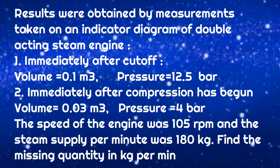Now the second question: the following results were obtained from an indicator diagram of a double-acting steam engine. Immediately after cut-off, volume equals 0.1 m³ and pressure equals 12.5 bar. Immediately after compression has begun, volume equals 0.03 m³ and pressure equals 4 bar. The engine speed was 105 rpm and steam supply per minute was 180 kg. Find the missing quantity in kg per minute.